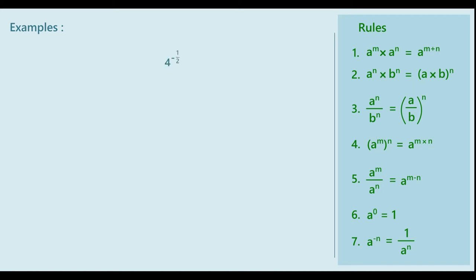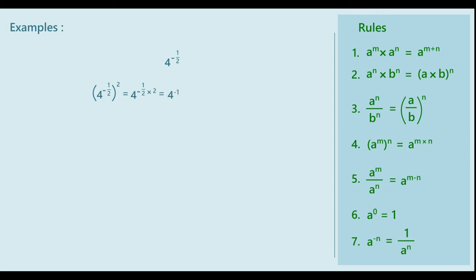Consider 4 raised to minus half. Which number is represented by this? As the procedure is understood, we can write: 4 raised to minus half, whole raised to 2, is equal to 4 raised to (minus half into 2), which is 4 raised to minus 1, which equals 1 upon 4, or 1 upon 2 squared, or 1 upon 2 whole raised to 2. So, 4 raised to minus half, whole squared, equals 1 upon 2 the whole squared. And hence, 4 raised to minus half is equal to 1 upon 2.